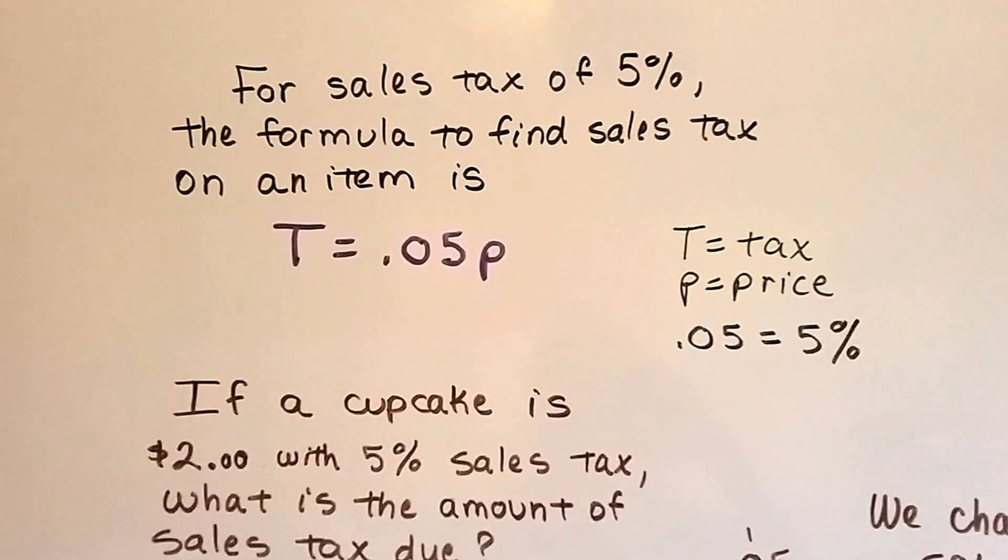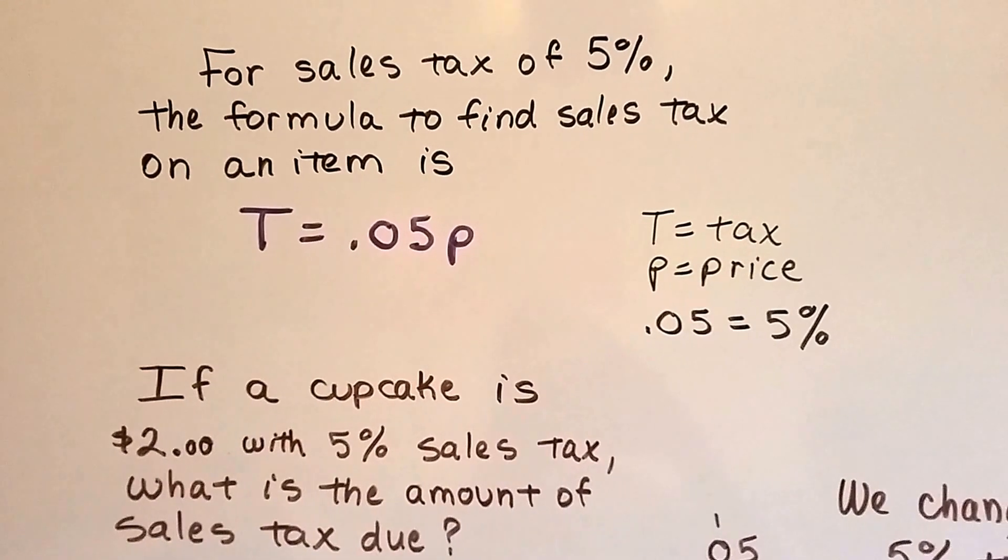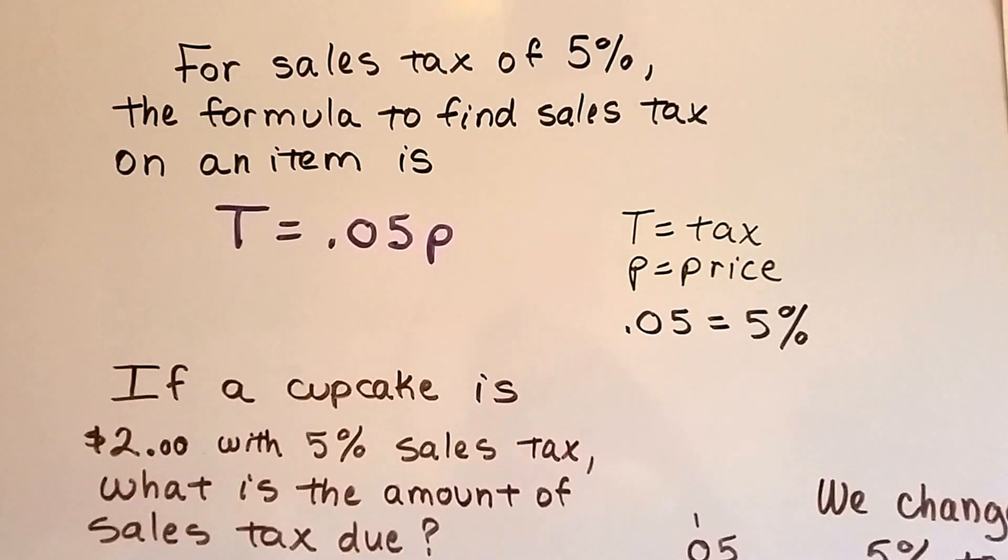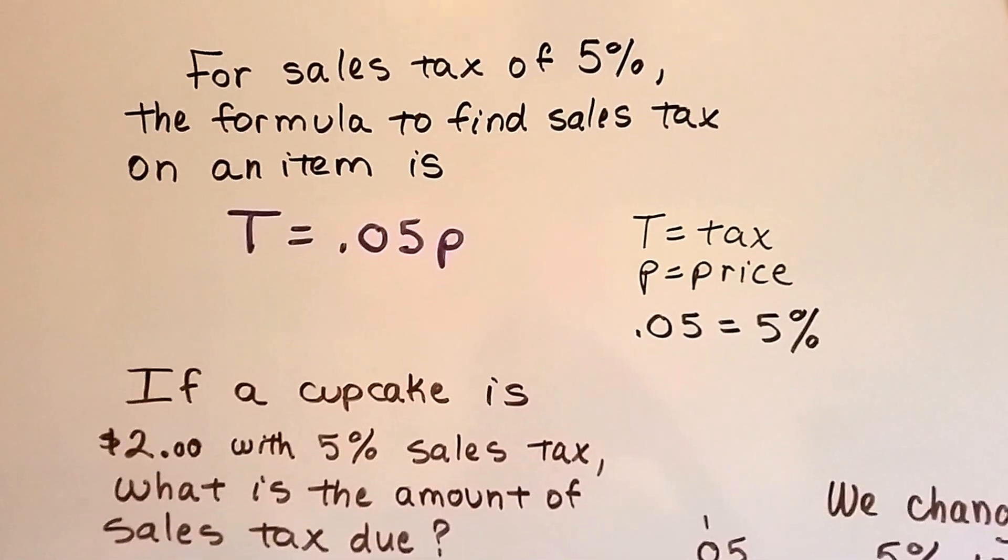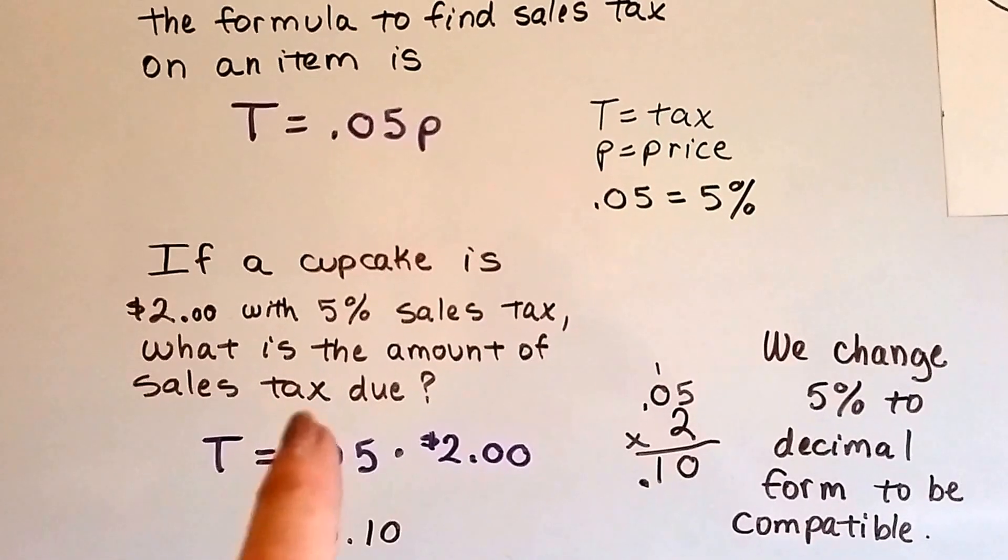For a sales tax of 5%, the formula to find sales tax on an item would be t equals .05p. And t is the tax, p is the price, and that .05 is the 5%. We had to change that 5% to a decimal form to be compatible to the money amount.